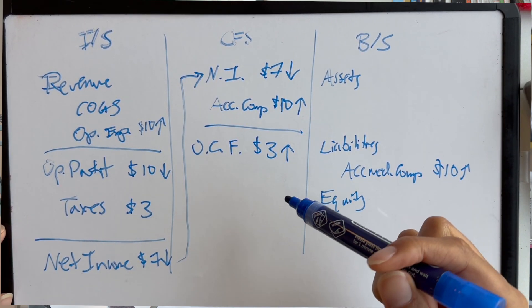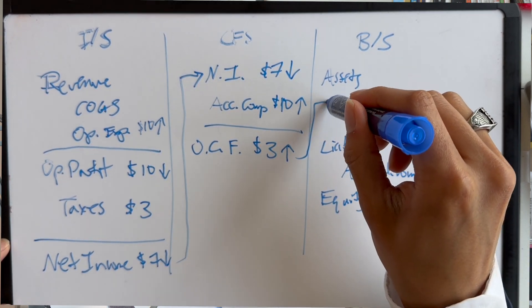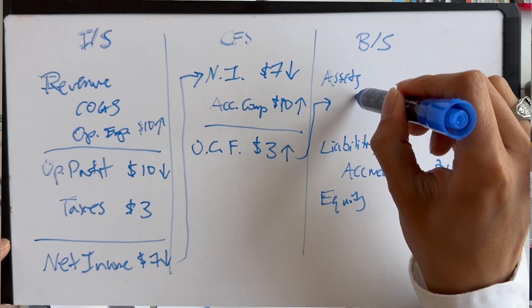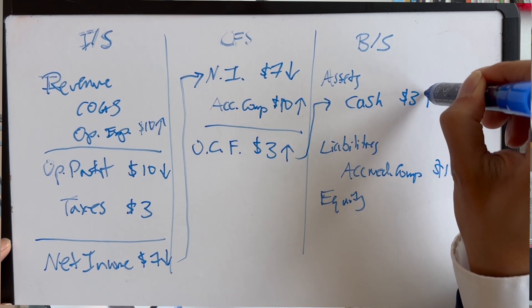Now, remember, when your cash goes up, that's an asset. So, that connects to the asset side of the balance sheet. So, your cash goes up by $3. Now, remember, the balance sheet must balance 100% of the time. So, cash is going up by $3 on the asset side. On the liability side, we already talked about accrued compensation being a liability. And so, that is going up by $10 by definition of the problem.